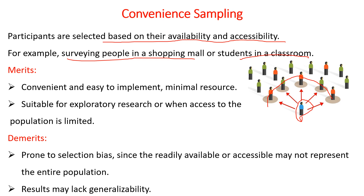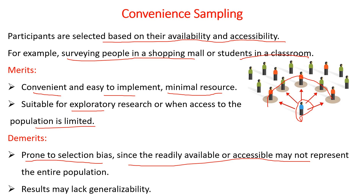For the merits of convenience sampling: it is convenient and easy to implement, requires minimal resources because the samples are easily accessible and reachable, and it is suitable particularly for exploratory research or when access to the population is limited. On the contrary, the demerits are that it is prone to selection bias since readily available samples may not represent the entire population, and results may lack generalizability.